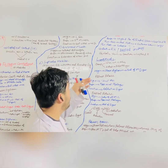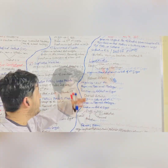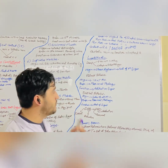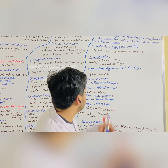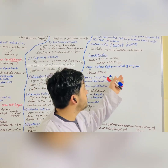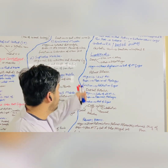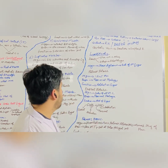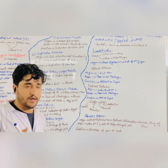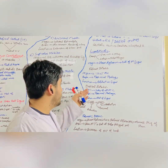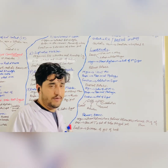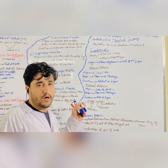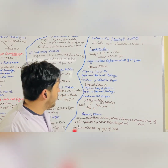The lumbricals flex at the metacarpophalangeal joints and extend at the interphalangeal joints. The palmar interossei originate from the sides of the metacarpals and insert at the proximal phalanges. Their function is adduction of the fingers. The dorsal interossei originate from adjacent sides of the metacarpals and also insert at the proximal phalanges. Their function is abduction of the fingers.